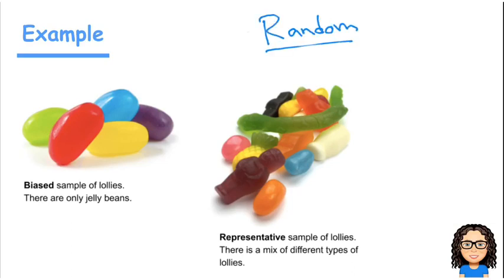If the data was randomly selected, then that is going to give us a representative sample, which has a mixture of all the different characteristics. Like having a mixture of different lollies, a different mixture of if it was people, their heights, their ages, their ethnicities, their lifestyle, their family income, they are all the things that make us who we are.